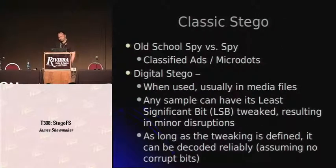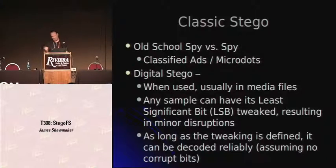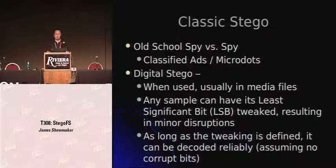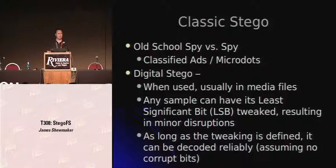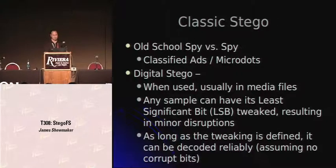Stego might be something as simple as somebody posting a classified ad — 'Wanted: single white female' — that's entirely code that really means something else. Or it might be something more subtle, something that's part of another message. Say you've got inside the tiny period of a letter on a printed page, a bunch of little ones and zeros subtle to the human eye — but if you know what you're looking for, you can decode those and there's your message.